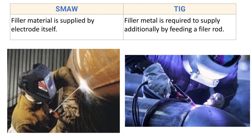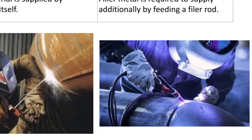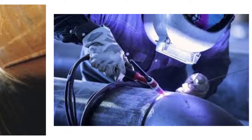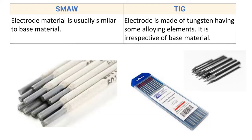For TIG, filler metal is required to be supplied additionally by feeding a filler rod. The arc is generated between a non-consumable electrode and the base metal, and filler is supplied additionally if required. If the root gap between the two parts to be joined is large, then filler is needed.